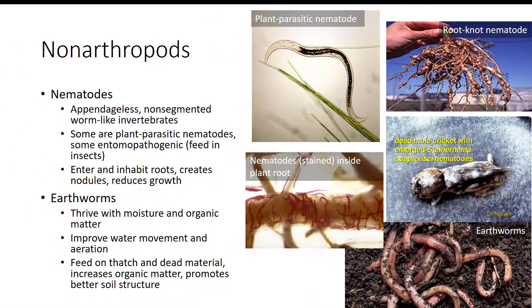Earthworms are very beneficial to the soil they inhabit. They do extremely well in areas that are moist and have high organic matter, so they are typically not found in dry, acidic soils. They improve the movement of water into the soil and soil aeration by producing holes in the soil. In addition, earthworms feed on thatch and dead material found in the soil, which increases organic matter and promotes better soil structure.